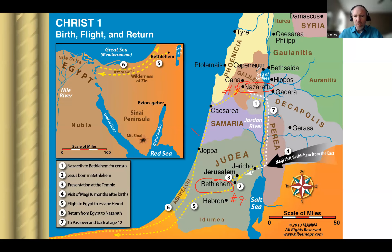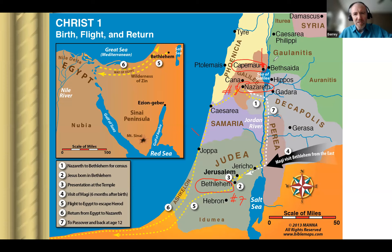Number nine is Capernaum. You'll notice that Capernaum is right on the edge of the Sea of Galilee — on its northern shore. When you travel to Israel today and visit Capernaum, there's a beautiful synagogue there. Capernaum is important because it was the headquarters of our Lord Jesus Christ's ministry. He grew up in Nazareth, but as he began his ministry, Capernaum became the headquarters.